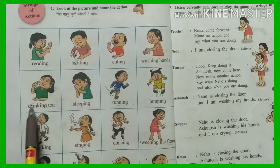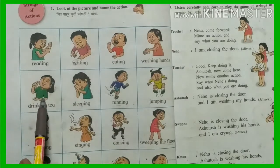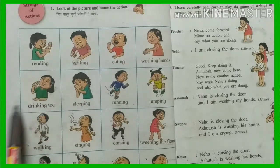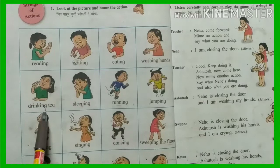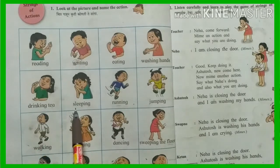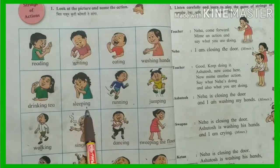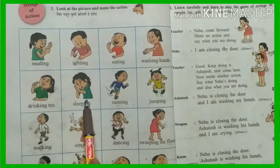Next picture: Drinking tea. That girl is drinking tea. Drinking means Pinne. Chaha means Tea. Next: Sleeping. S-L-E-P-I-N-G. Sleeping means Dhopne. That girl is acting like sleeping.